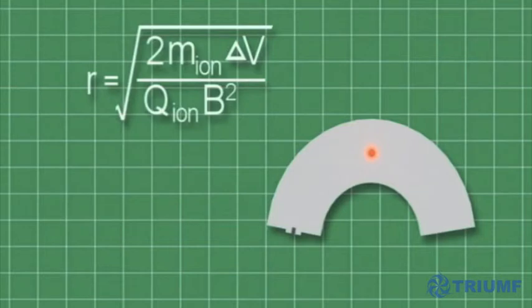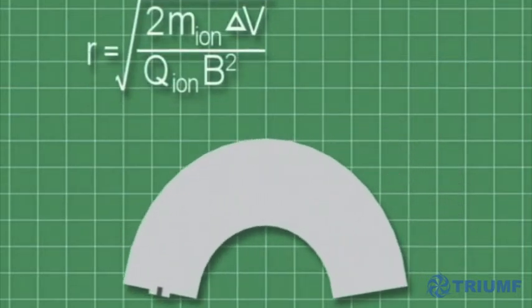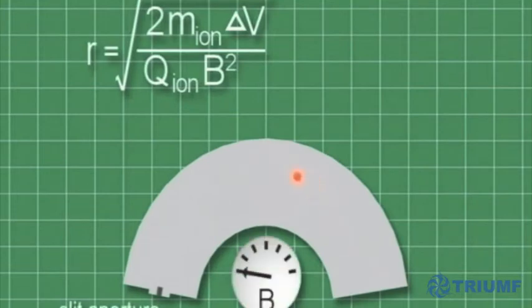Since the accelerating voltage is kept fixed and the charge of the ions is known, we see that by simply adjusting the magnetic field, we can select the ionic mass that curves just the right amount to exit a narrow passageway out of the magnet.